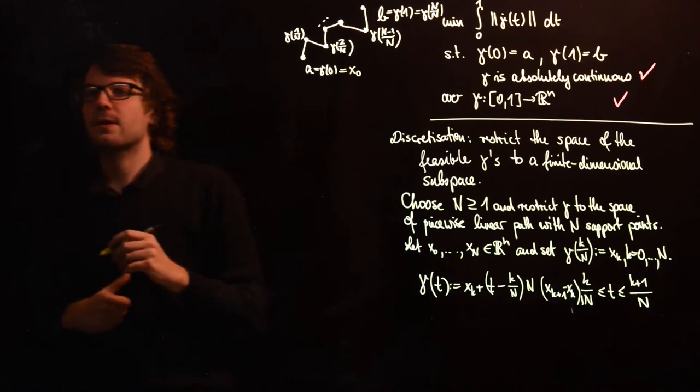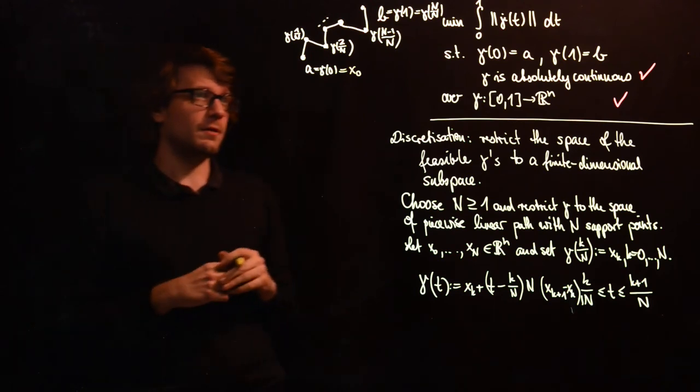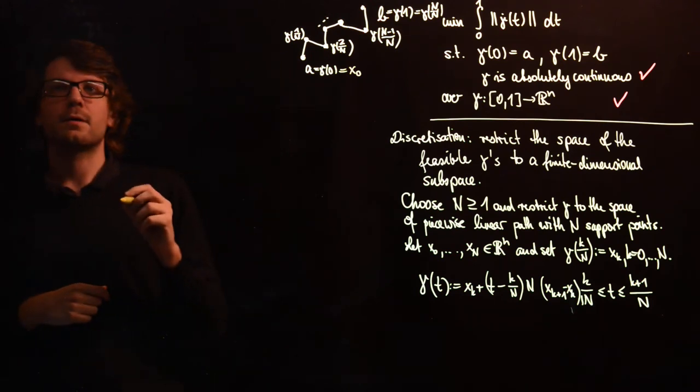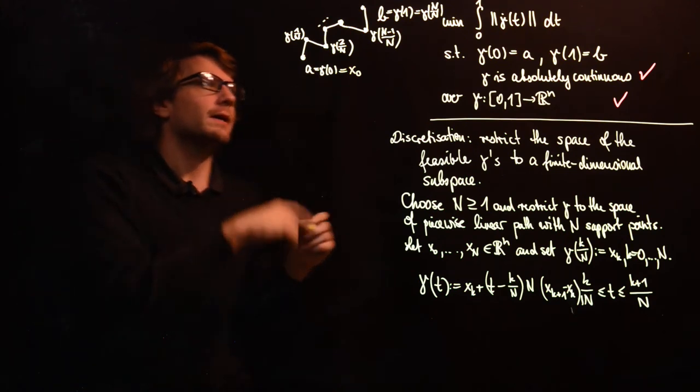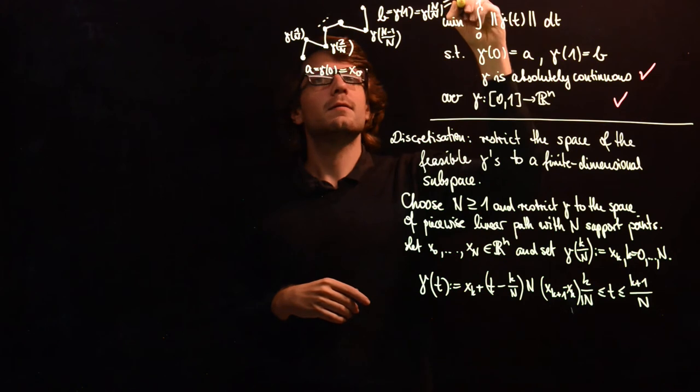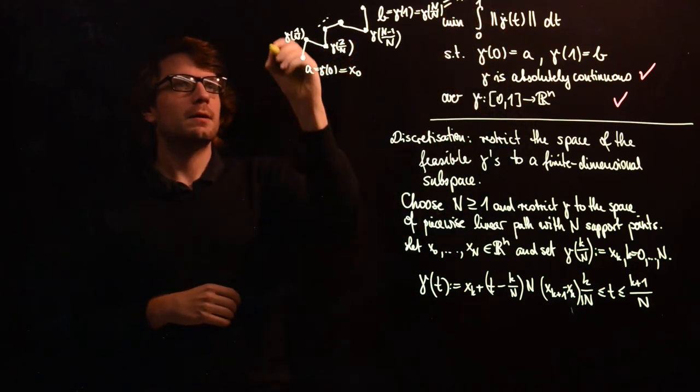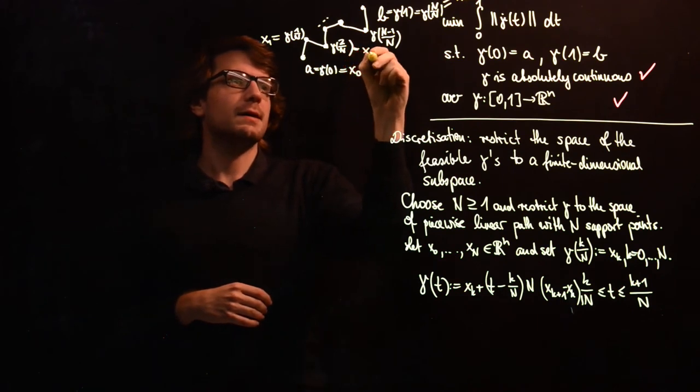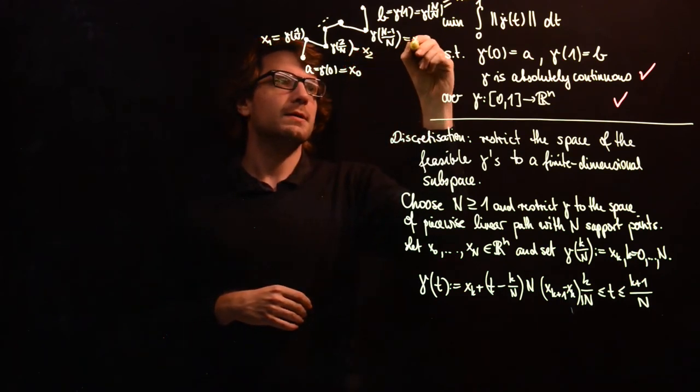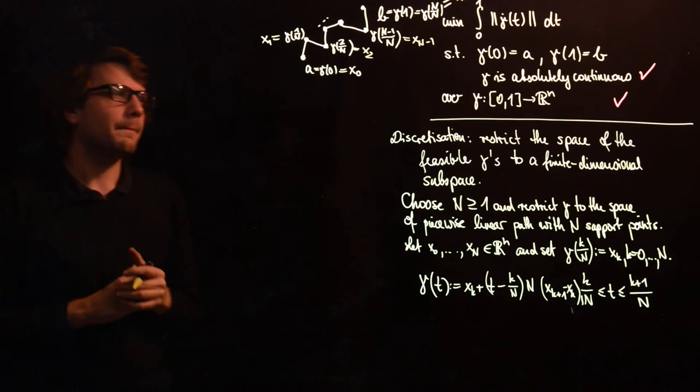The constraints are given by x0 equals a and xn equals b. By the way, this one is x1, this one is x2, and this one is xn minus 1.